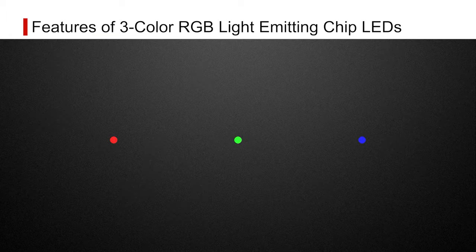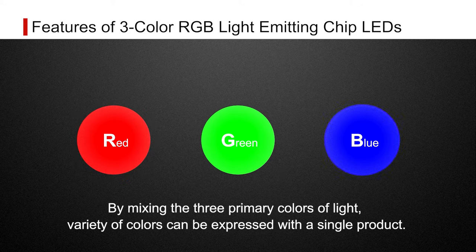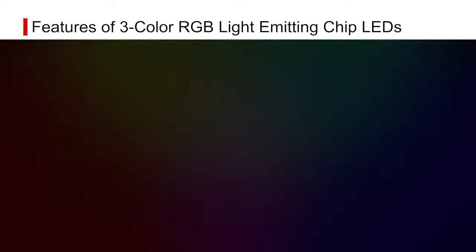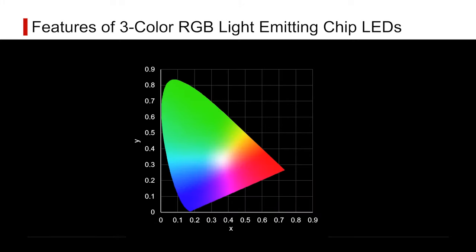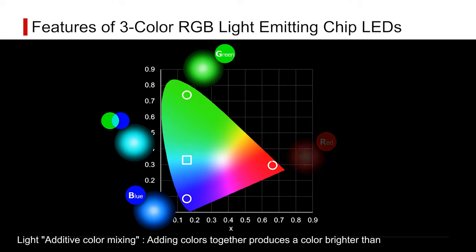RGB LEDs are three-color emitting chip LEDs capable of expressing a variety of colors by combining the three primary colors: red, green, and blue. For example, lighting up green and blue at the same time produces light blue.